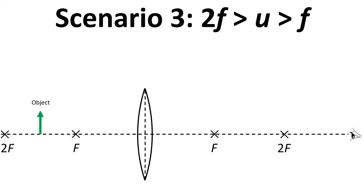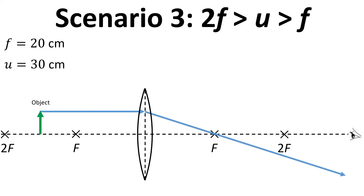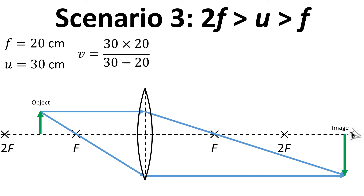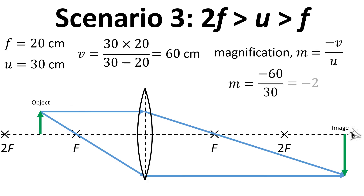For scenario three the object is in between f and 2f. Using those values and drawing the light rays shows where the image will form. Putting the numbers into the thin lens equation gives v equals 60 centimetres, and magnification equals minus 2.